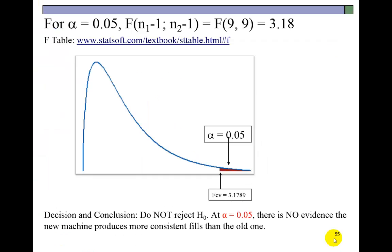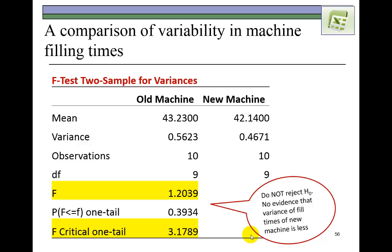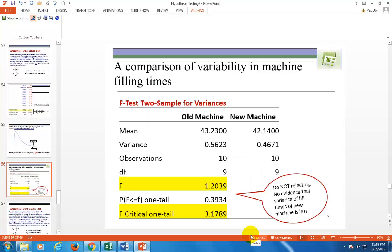And so, based on this, we do not reject the null hypothesis, and we conclude that there is no evidence that the new machine produces more consistent fields than the old one. So, don't waste money buying the new machine thinking that it's going to be more efficient. Here's the result of using Excel to do this. Let's show how that's done.